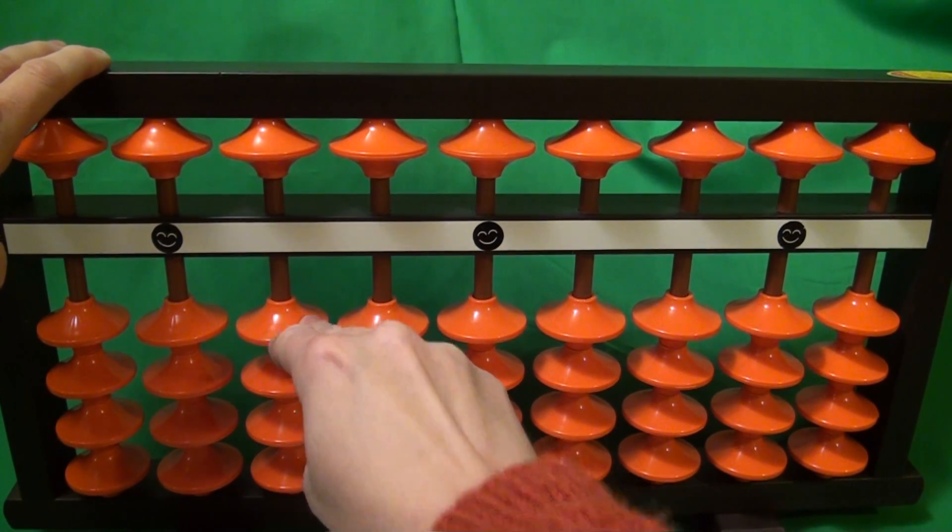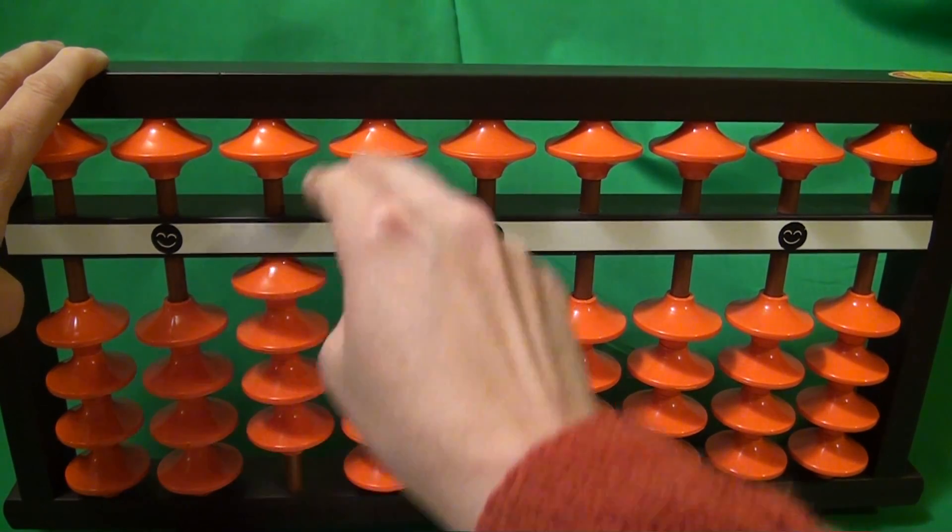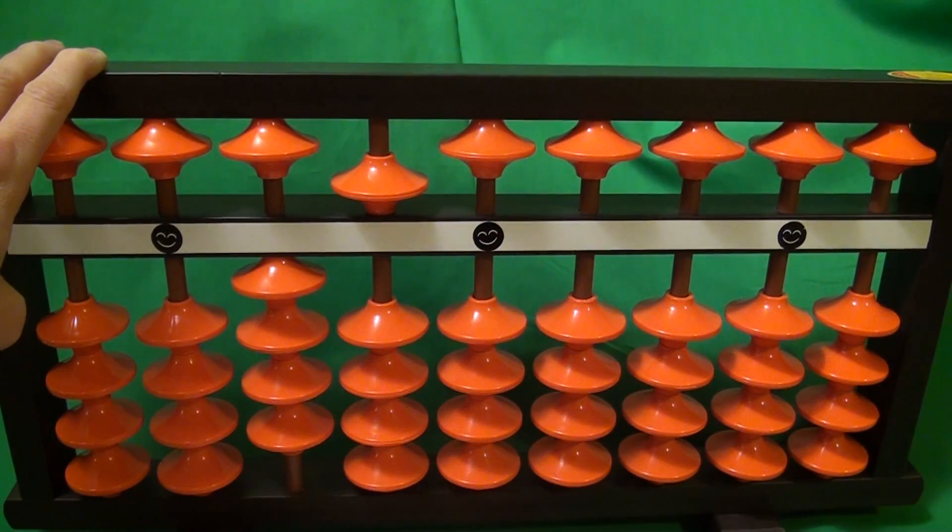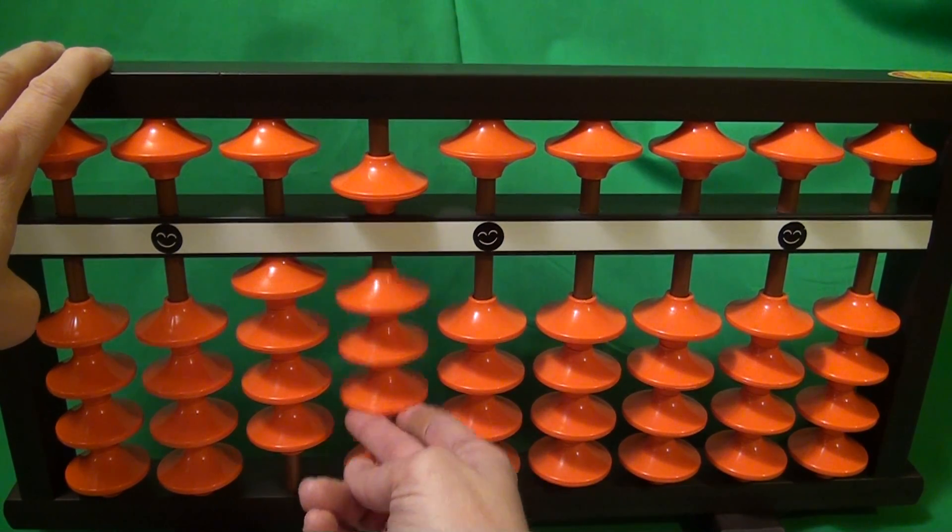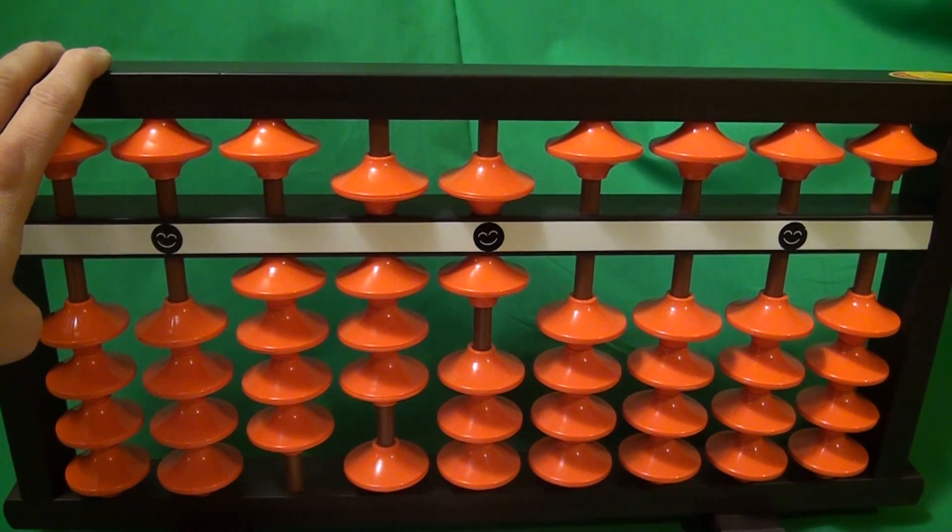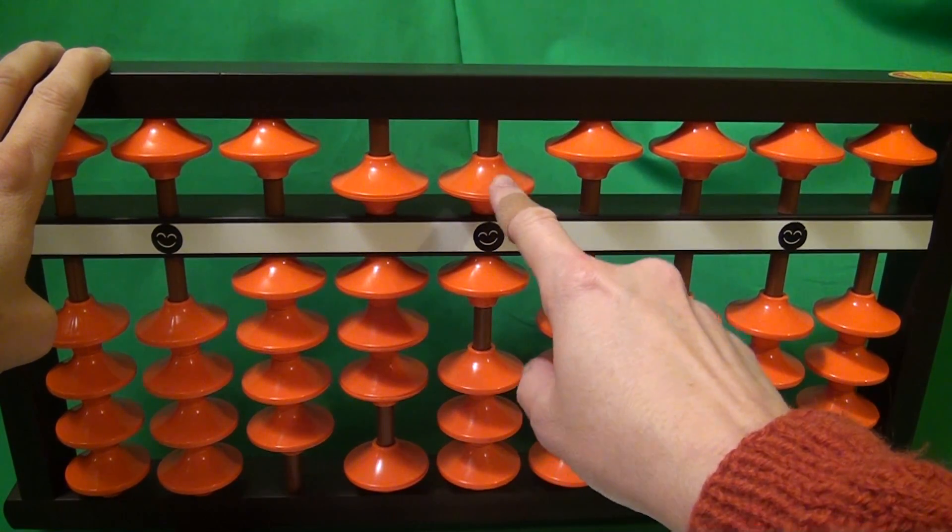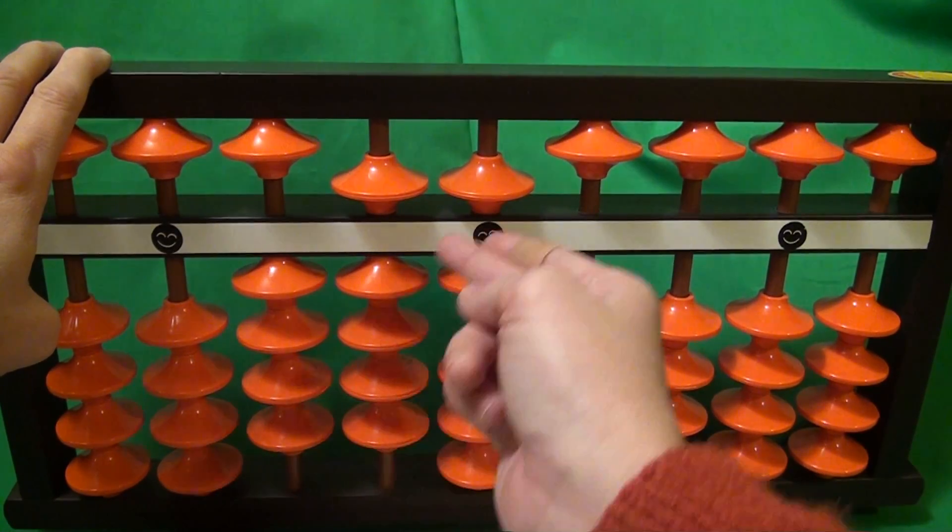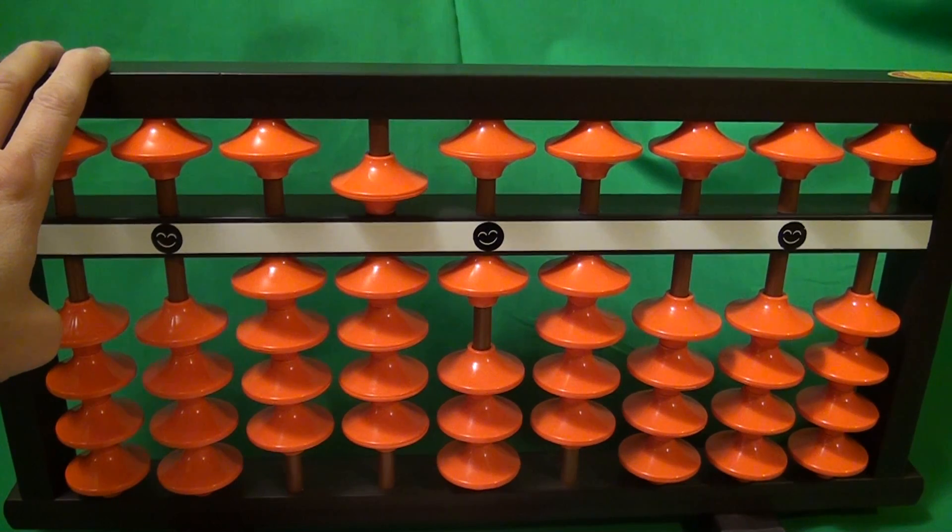We multiply by the 9. So 5 times 9 is 45. 4 and a 5. Now 4 times 9 is 36. So 3 and 6. And then 9 times 6 is 54. So we have to add a 5 here. So 5 and 4. 54. That's taking care of the 9.